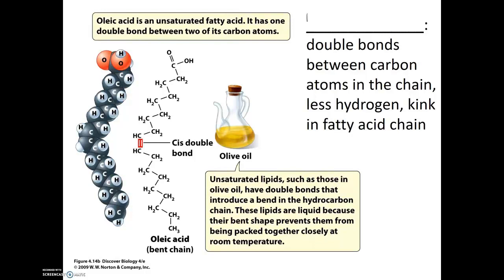Unsaturated fats, on the other hand, will have a carbon-carbon double bond somewhere along the length of the fatty acid. Because there is a carbon-carbon double bond, there is less than the maximum number of hydrogens — that's why this molecule is called unsaturated. Unsaturated fatty acids are more likely to be liquid at room temperature; these are our oils like olive oil, vegetable oil, or soybean oil.